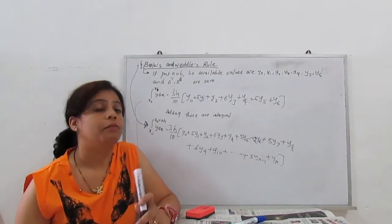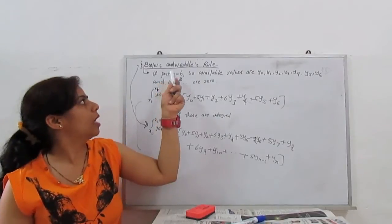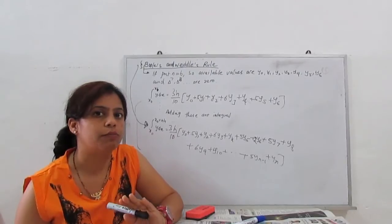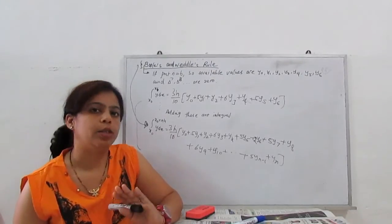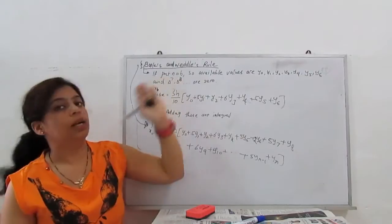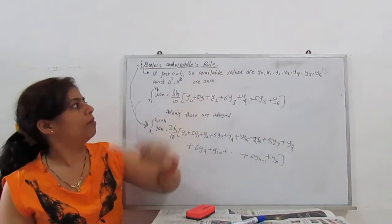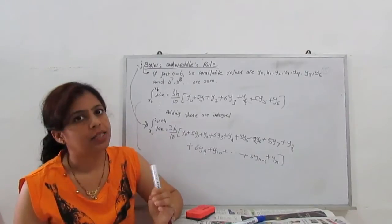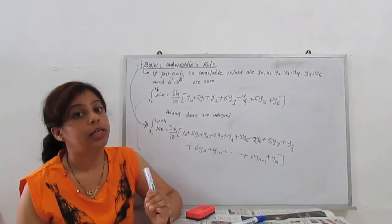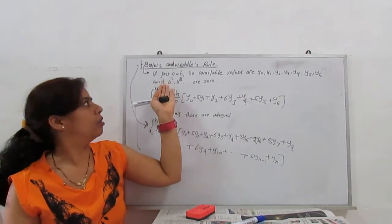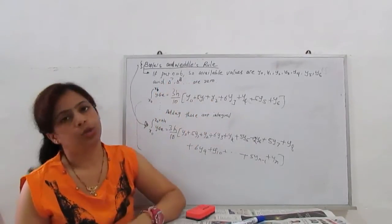Wedel rule is when we put n equal to 6. Boulez we put n equal to 4. Simpson 3 by 8, n equals 3. So when we put in our formula n equal to 6, available values are y0, y1, y2, y3 till y6, and all further derivatives del 7, del 8 are going to be 0.